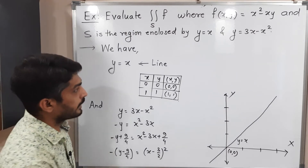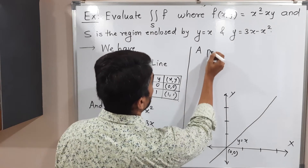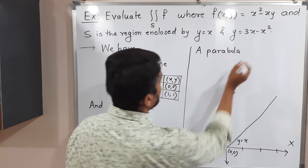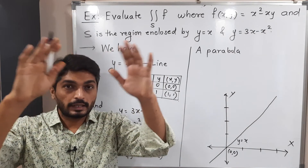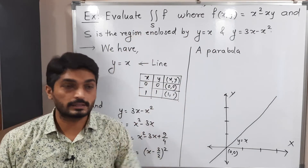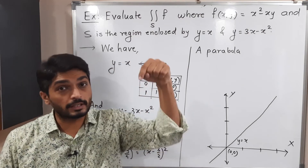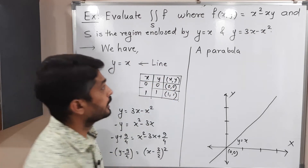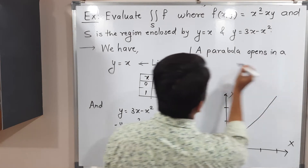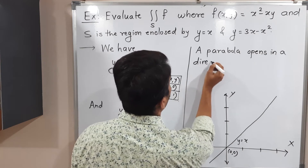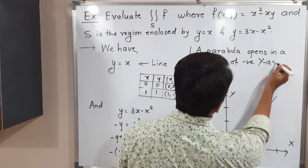So we have expressed the equation of the parabola in its standard form. This is a parabola where the power of y is 1, meaning it is oriented along the y-axis. It has a minus sign, so the parabola opens in the downward direction — in the direction of the negative y-axis.